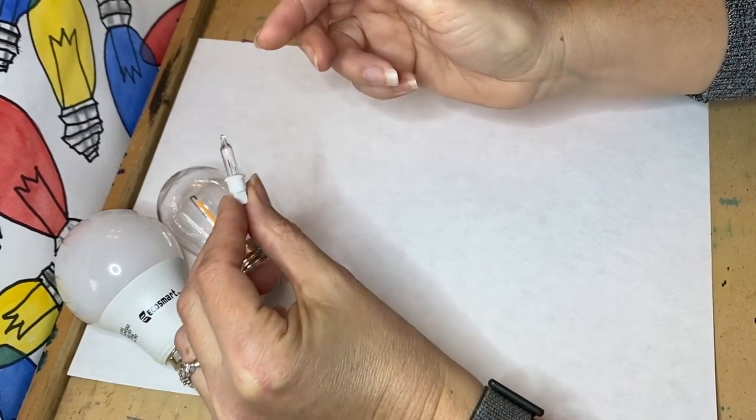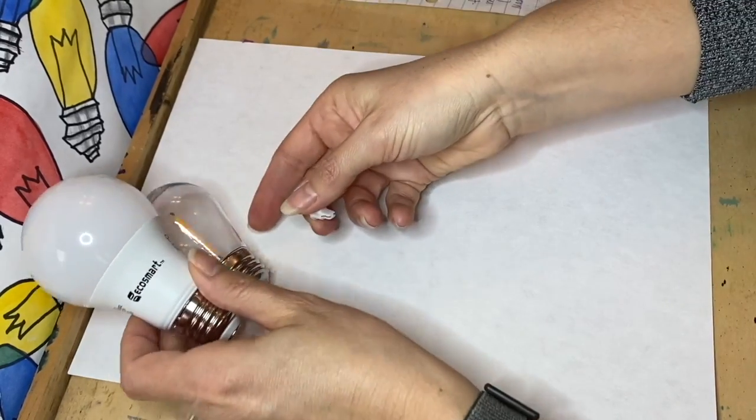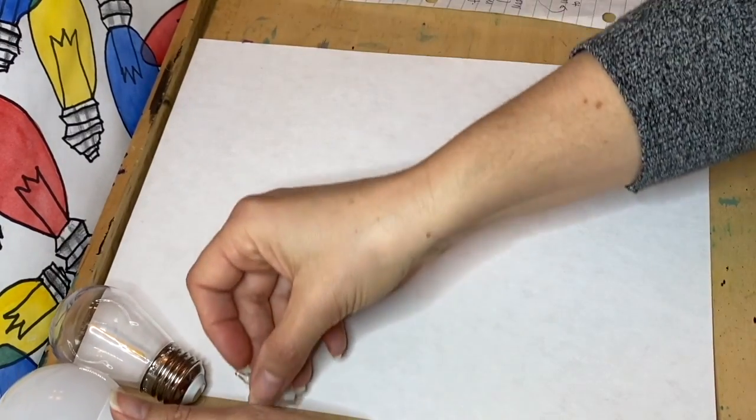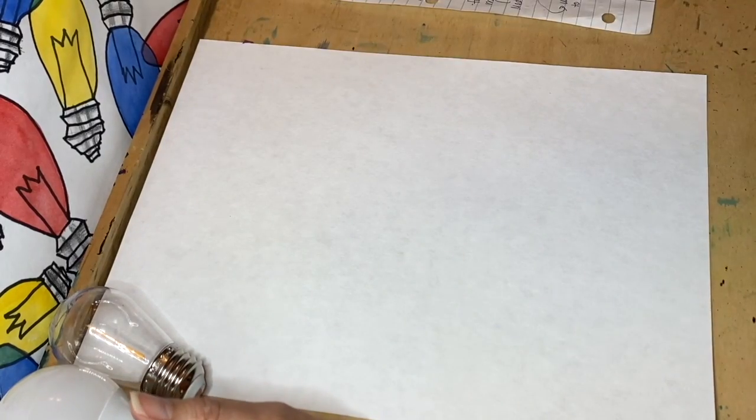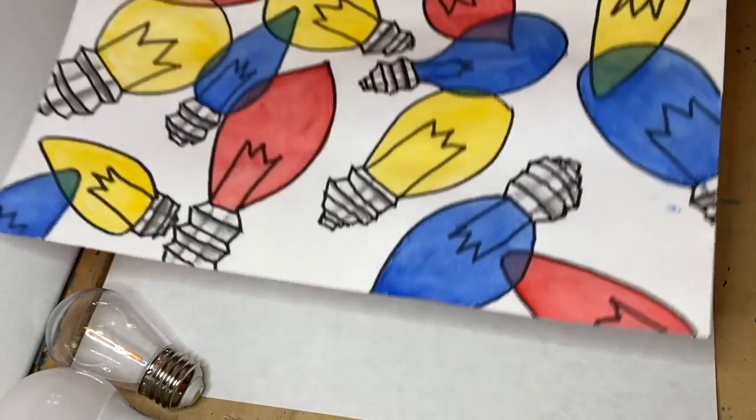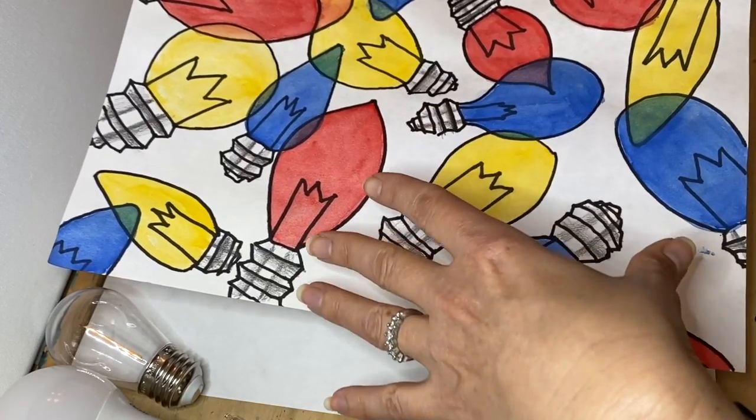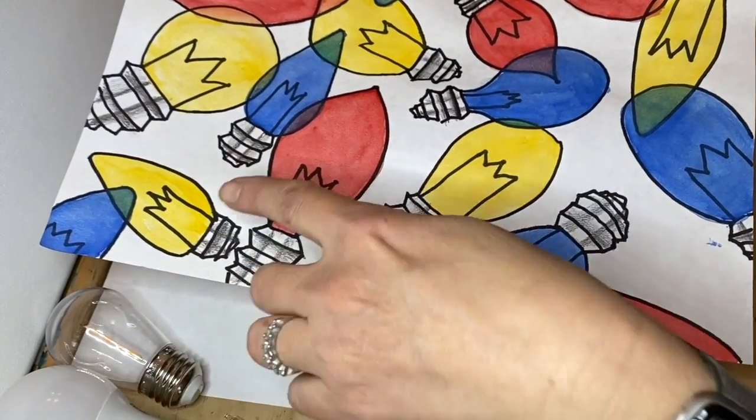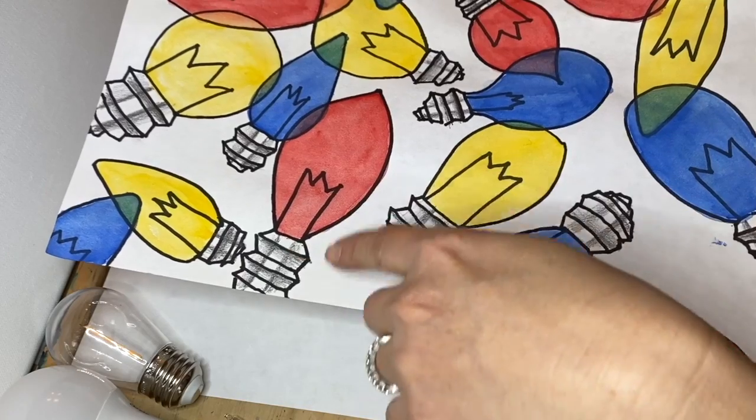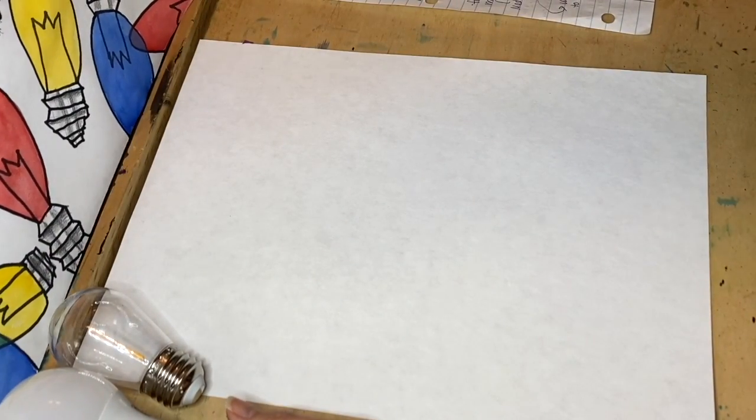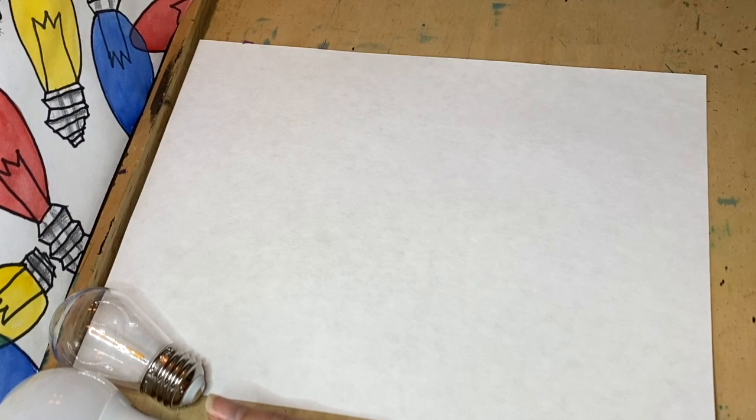So what we're going to actually do is draw a series of different shaped light bulbs, different shaped glass, and we're going to draw the filament inside. Then we're going to paint them using primary colors to make secondary colors, and then we're going to shade the metal.